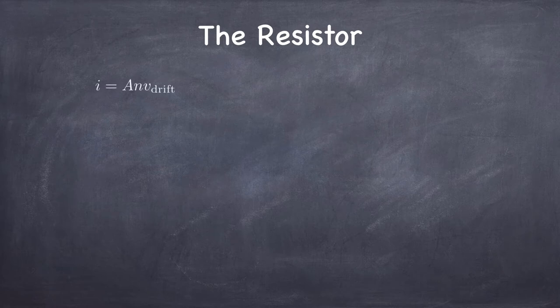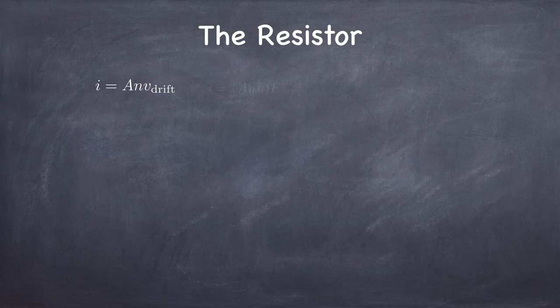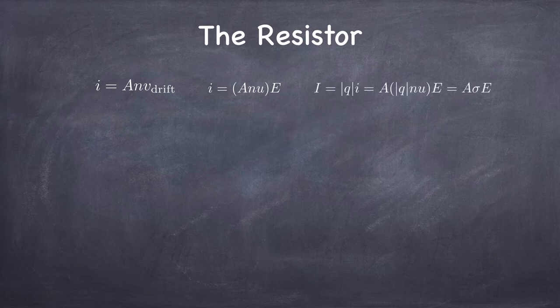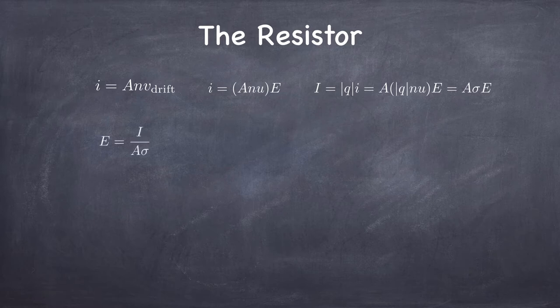Let's talk about a resistor. A resistor is just a conductor with some free charge carriers that can drift around. The electron current is the drift velocity times the number of carriers per unit volume times the cross-sectional area. The drift velocity is proportional to the electric field strength, with the proportionality constant being the mobility. So we can write the electron current as A times n times u times E. The conventional current is q times n times u times A times E, and that product q times n times u is called the conductivity sigma.